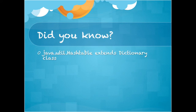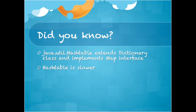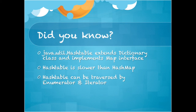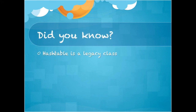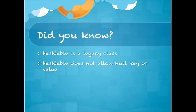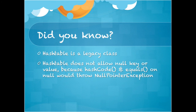Did you know? java.util.Hashtable extends the Dictionary class and implements the Map interface. Hash table is slower than HashMap. Hash table can be traversed by an enumerator and an iterator. Hash table is synchronized, so it is thread safe. Hash table is a legacy class. Hash table does not allow null key or value, because hashCode and equals on null would throw a NullPointerException. So Java came up with HashMap.